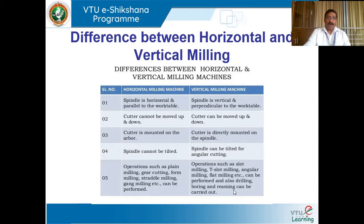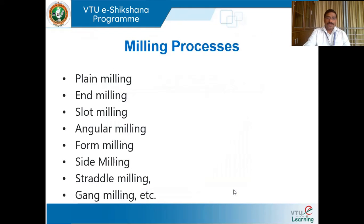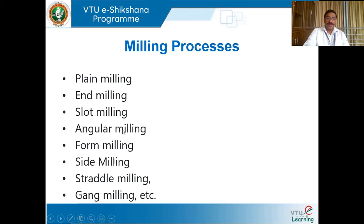We will discuss the milling operations one by one. The milling operations are: plain milling (also called slab milling), end milling, slot milling, angular milling, form milling, straddle milling, and gang milling — seven operations in total.